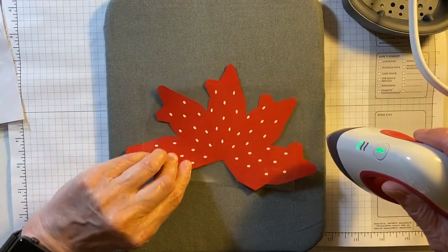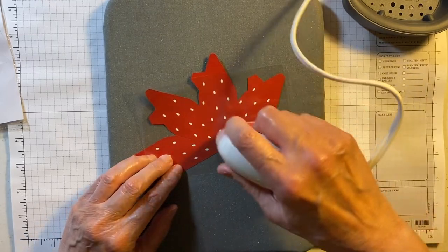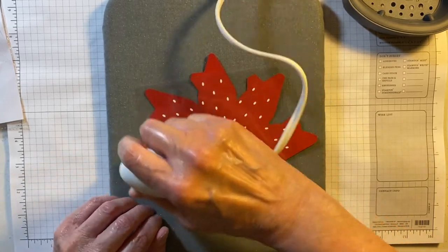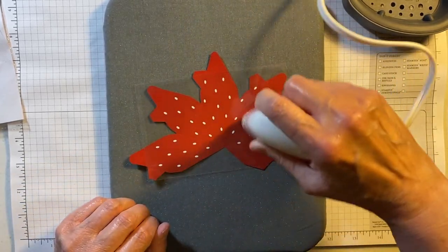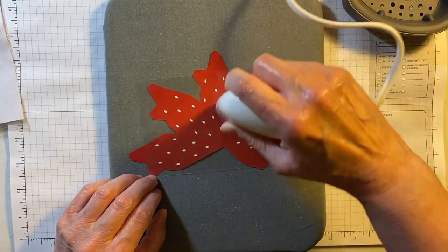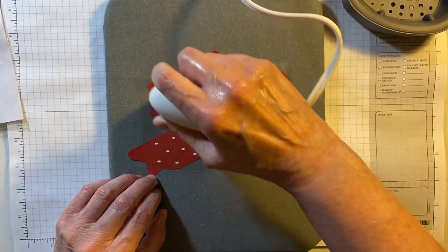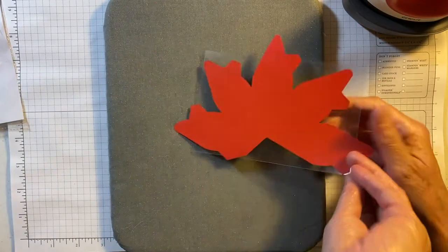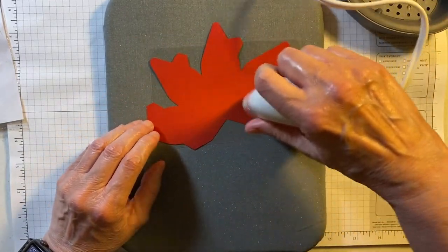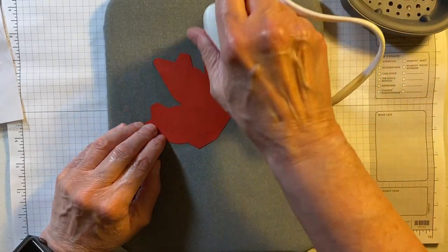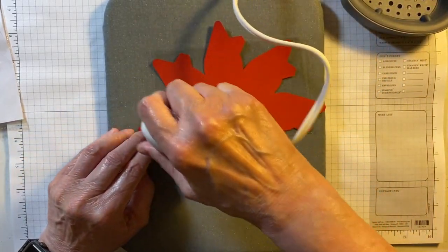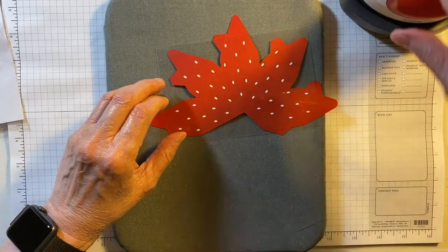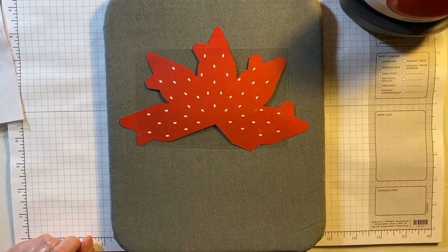I'm going to go over this again because I forgot to use my EasyPress mat. So I'm going to flip it over and do the back side. And I believe you do this for like 15 seconds. I'm going to let it cool off.